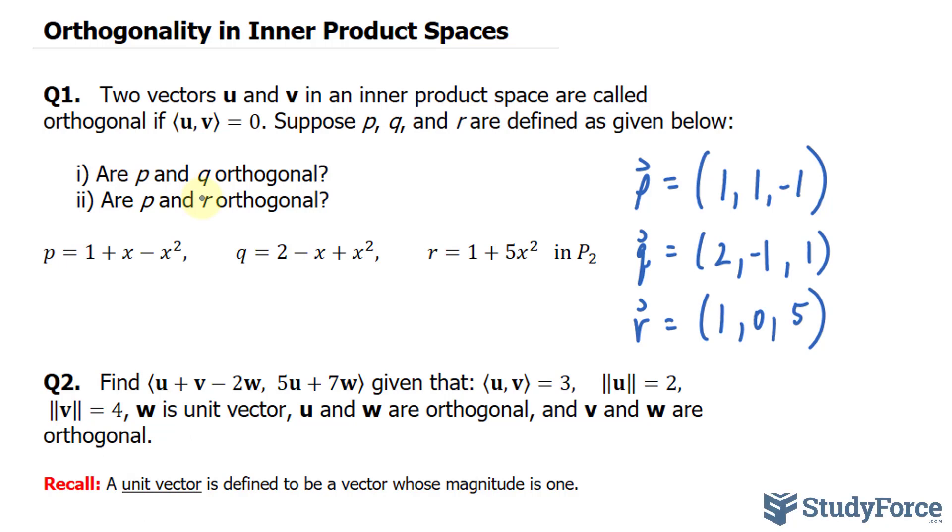So let's prove that p and q are orthogonal. The inner product of vector p and vector q, to find the inner product, we multiply the first components together. So 1 times 2, plus 1 times negative 1, plus negative 1 times 1. We end up with 2, minus 1, minus 1, and that is 0. Therefore, p and q are at right angle to each other.